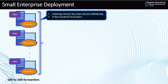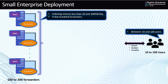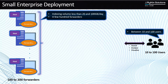The second characteristic is the number of forwarders. If you are looking at a few hundred forwarders — maybe between 100 and 200 forwarders, or maybe a little bit more in that range — you should start thinking that a small enterprise deployment is what is going to fit your needs. For users, you would typically be talking about between 10 and 100 users connected concurrently and running searches within Splunk.